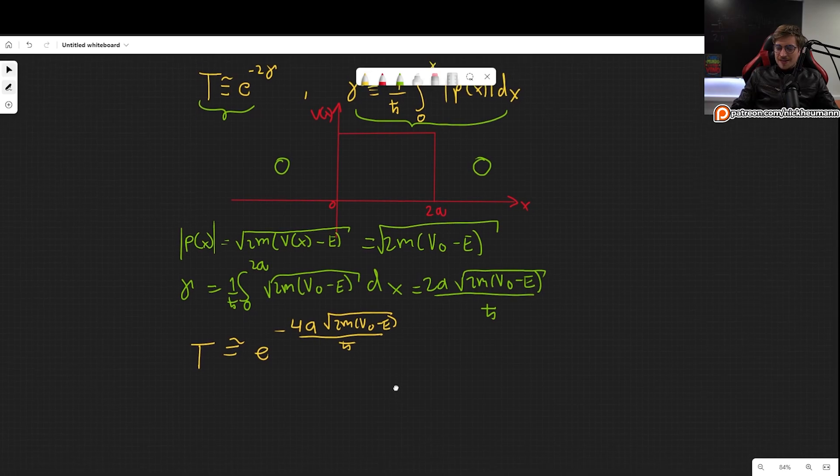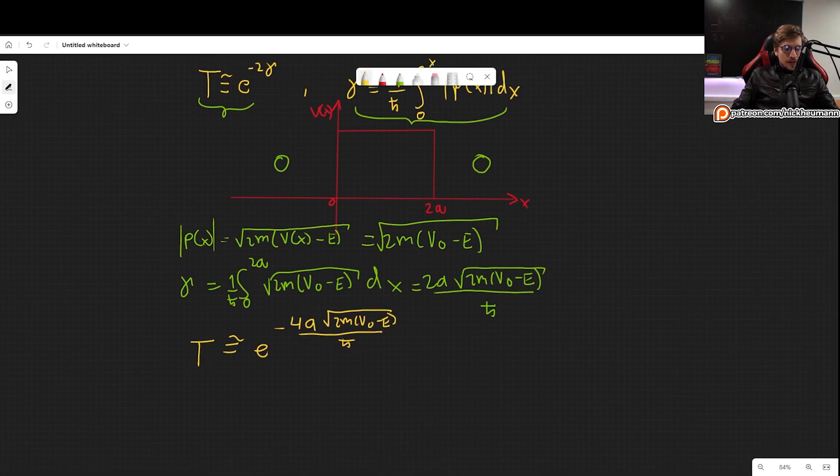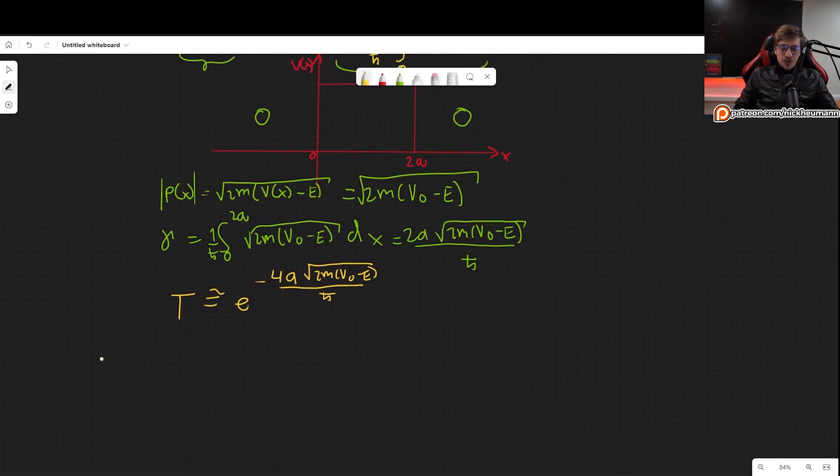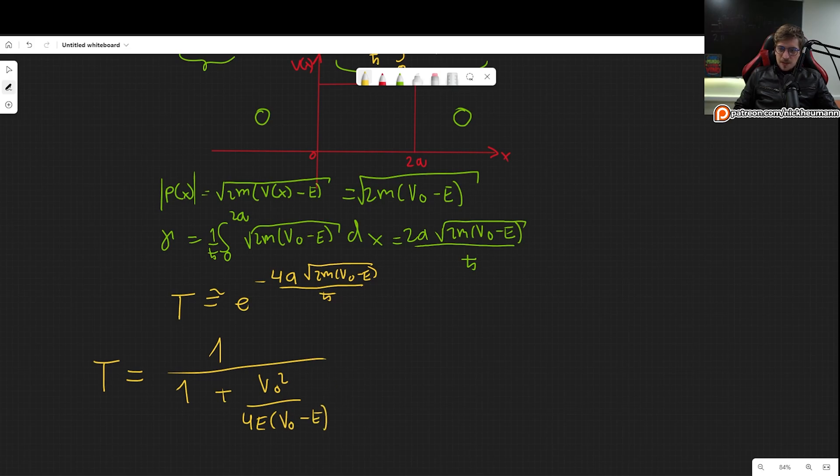T is approximately e to the minus 2 times this, so T ≈ e^(-4a√(2m(V0 - E))/ℏ). And that is our transmission coefficient according to the WKB approximation. However, is this correct? That is the question.